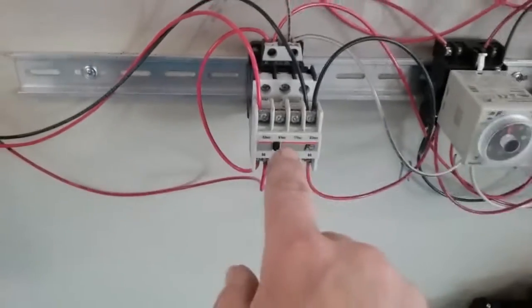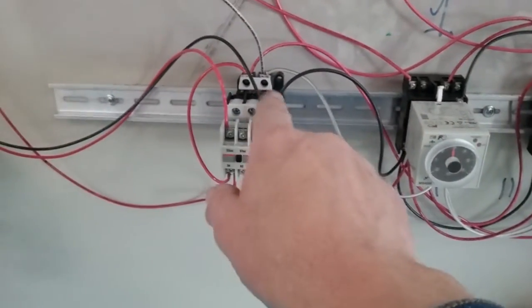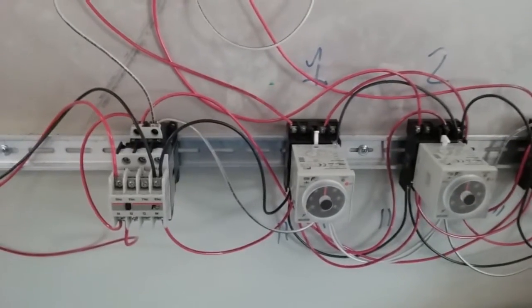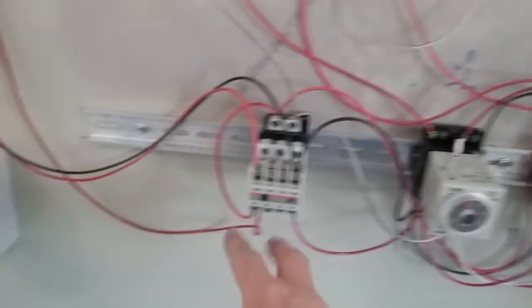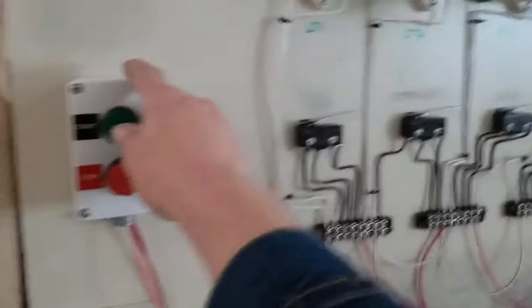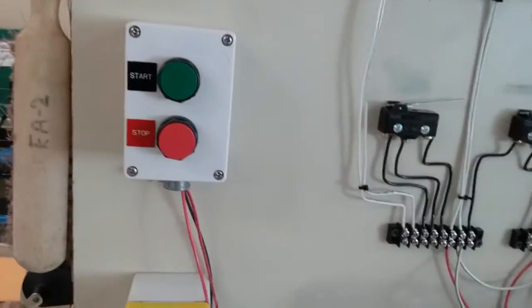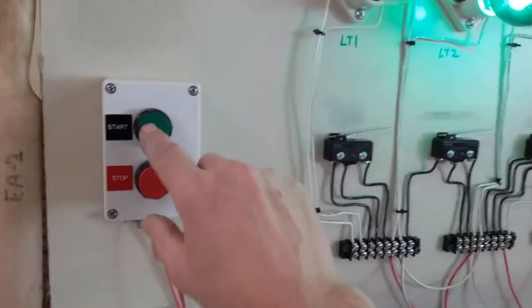What this contactor does is two things. First of all, it sends the power to the control for the timers. Second of all, it acts as a holding relay so that I don't have to sit here and hold the start button down. That doesn't happen automatically - that's a momentary contact switch inside the start button. We use the contactor to latch that switch using magnetism to accomplish that.